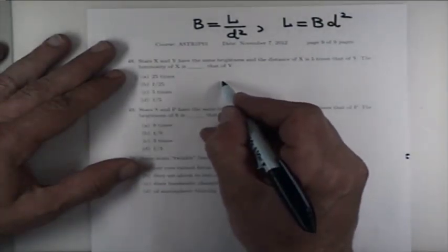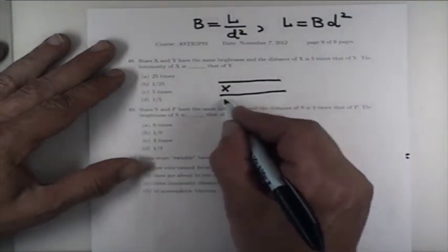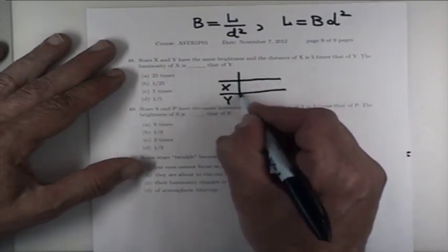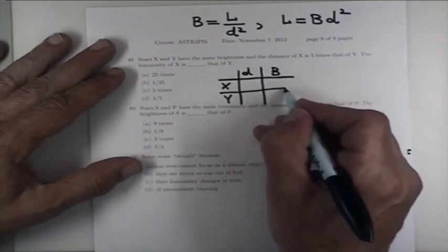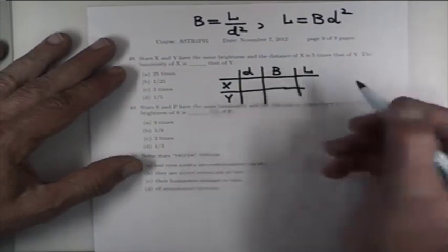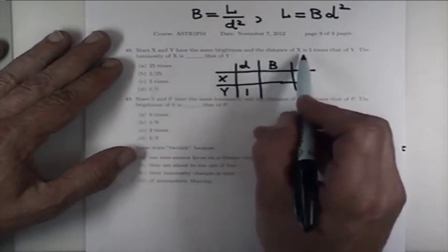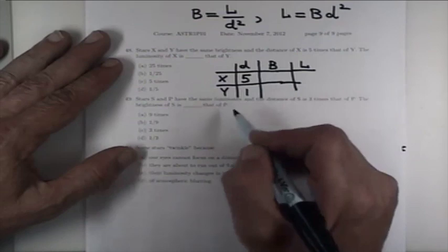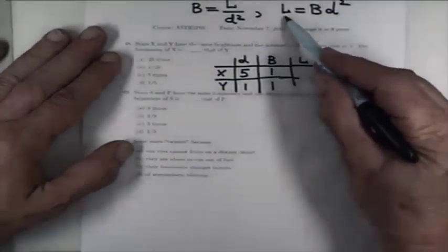Let's make a little table. Here, we have star X, and here we have star Y, and then we have the distance, and we have the brightness, and then we have to figure out what the luminosity is. So if I pick the distance of Y to be one, then in those units, since X is five times more distance, then the distance of X is five. They are equally bright, so I can take the brightness to be one for both. Then I just need to use this relation here.